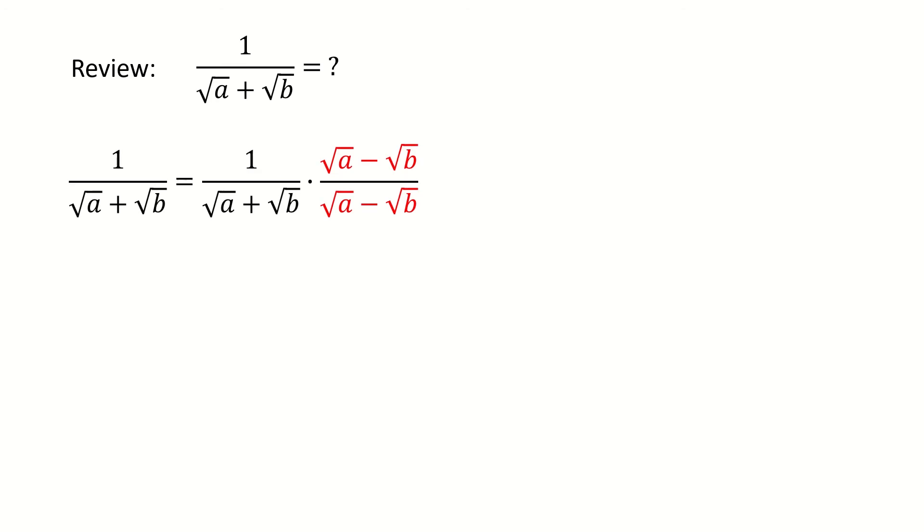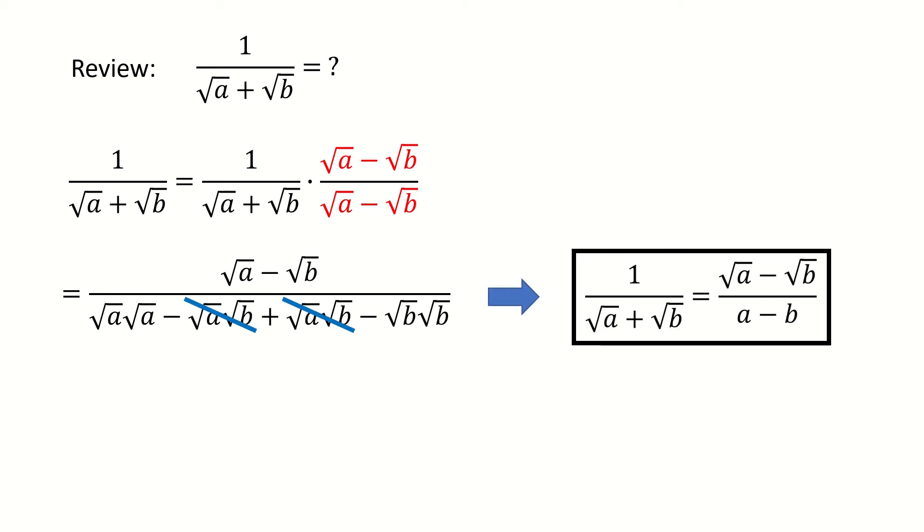So we multiply the square root a minus square root b in both the numerator and denominator. So we got here. We expand it, and we found the cross term cancel out. So we got here. So we can see there's no square root terms in the denominator anymore.